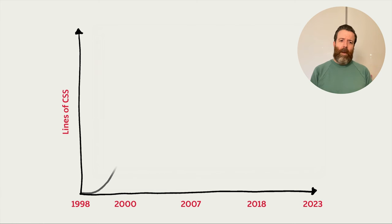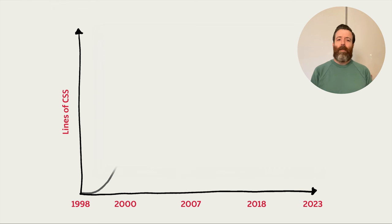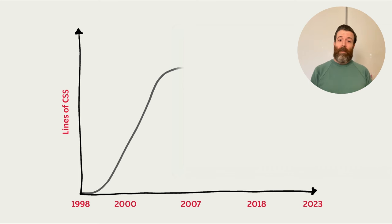Thinking about the number of lines of CSS I've been writing per year since I started making websites — I know we all lie in bed at night and think about these things. For me, the graph starts back in 1998 when I first was being paid to make websites and there was no CSS. So it's a glorious flat line. And then things start to curve up a bit once you hit around the 2000 mark.